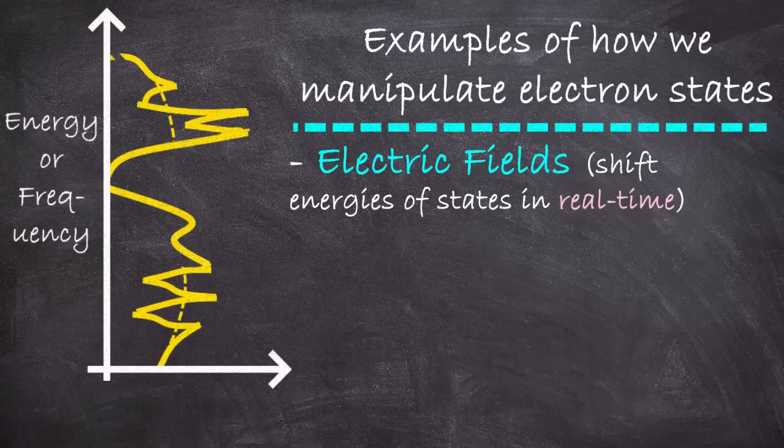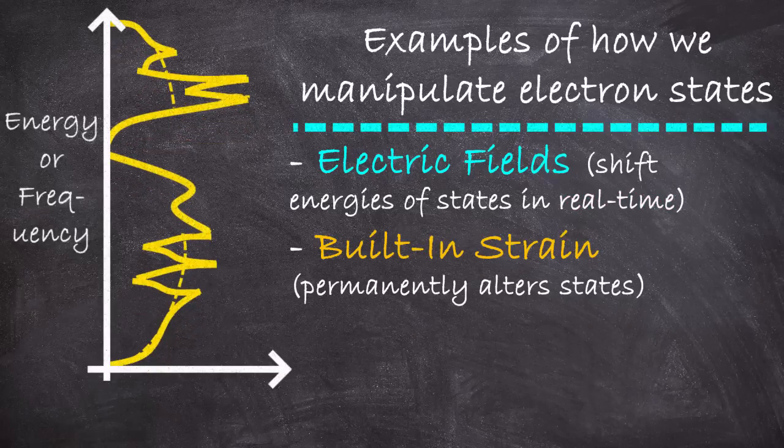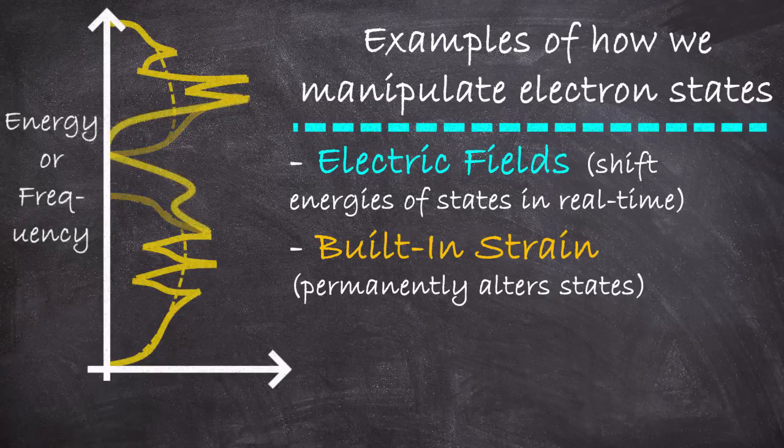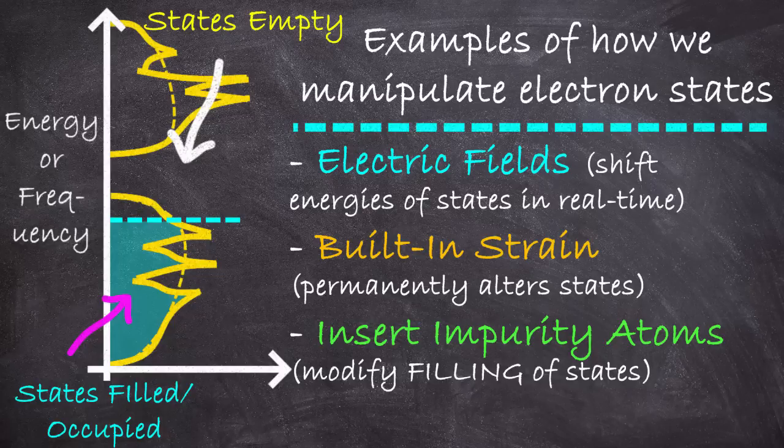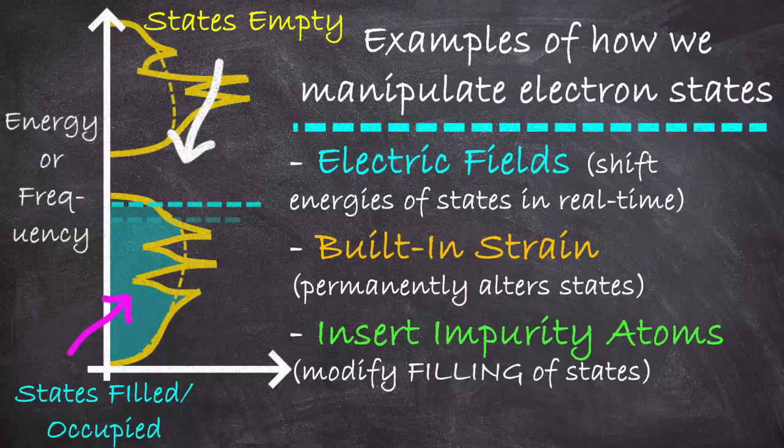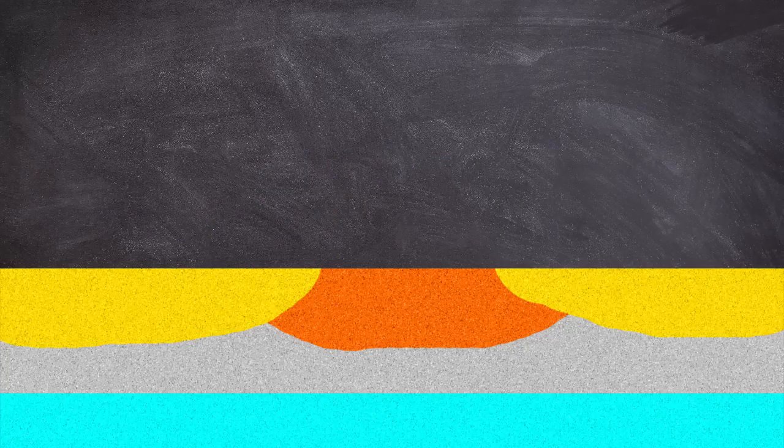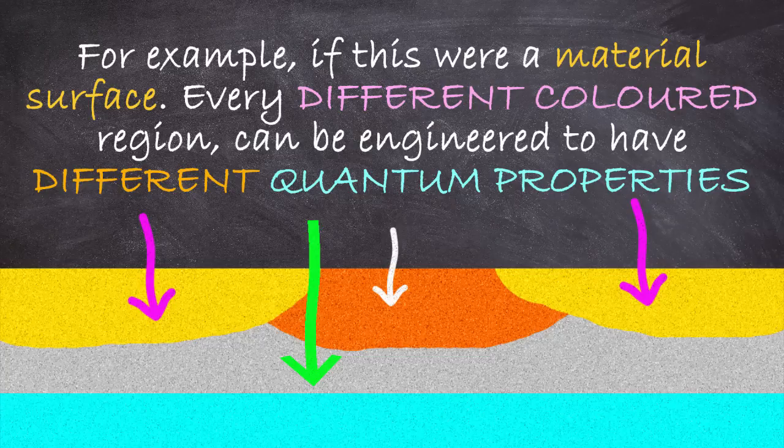Specifically, we can apply an electric field if we want to tune these states in real time, or we can alter them permanently by engineering material strain, which distorts the shape of these continuum states in a targeted way, or by literally injecting impurity atoms into the material. These impurity atoms are chosen so that they join the material, but they have a different number of electrons than the rest of the atoms. And thus, rather than distorting the states themselves, they more cause a change in the filling of these energy states. And we don't just do this across the whole material, we do it locally. In a single solid chunk of material, we can use approaches like this to create different physical regions engineered to have different quantum states, and thus manipulate the flow of electrons.